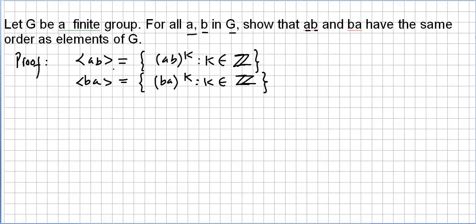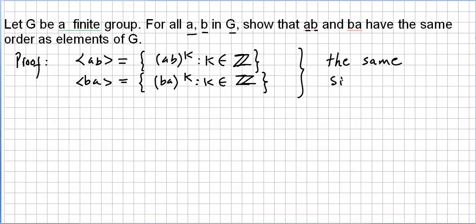All we need to do is show that the two sets — ⟨ab⟩, the set generated by ab, meaning (ab)^k for all integers k, and ⟨ba⟩, the set generated by ba, meaning (ba)^k for all integers k — have the same size. If we can prove that these two sets have the same size, then it follows that the order of ab and the order of ba are the same.